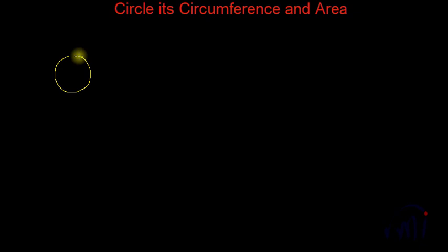Hi, in this video we are going to learn about circle, its area, its circumference. A circle is actually an enclosed figure where each point on its perimeter has the same distance from a particular point, and that particular point is known as the center of the circle.